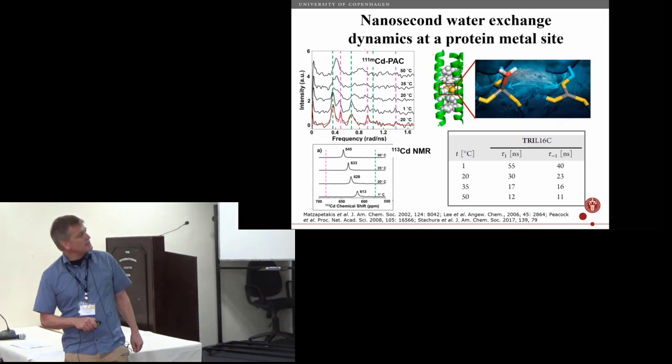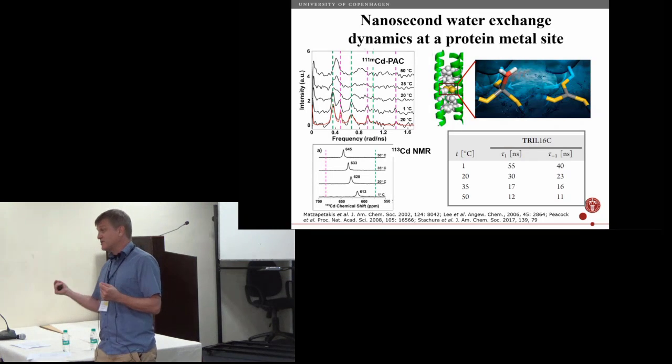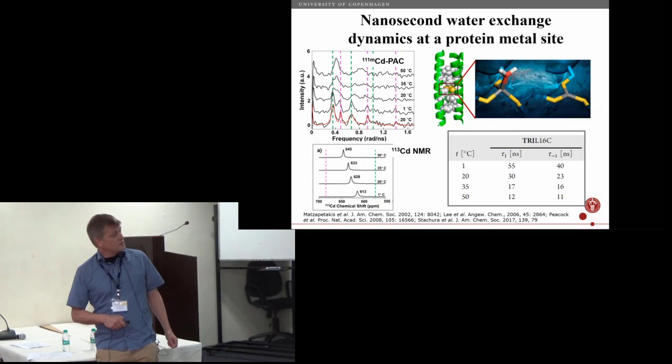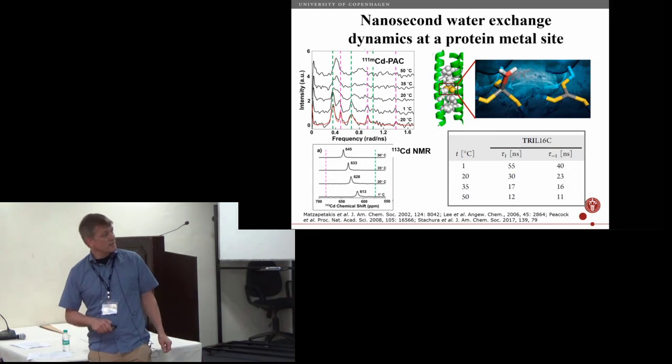So we did that and what you see here, if you increase the temperature, you move into the intermediate exchange regime with a lot of line broadening, and at higher temperatures you begin to move into rapid exchange also on the PAC time scale of these two species. From that you can derive the lifetimes of these two species in equilibrium with each other.